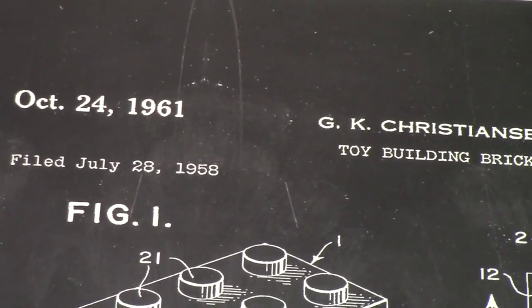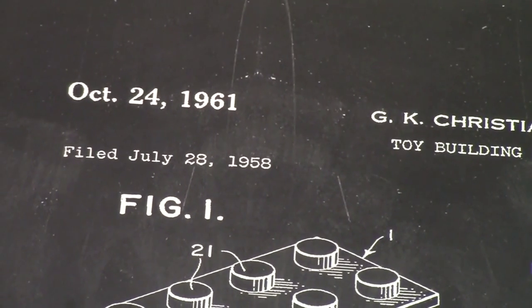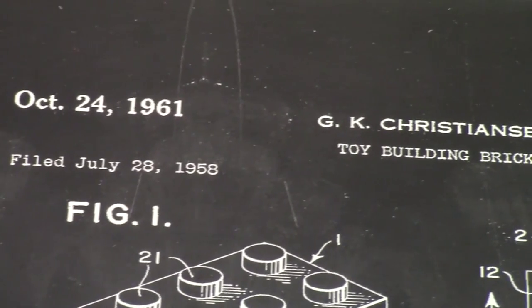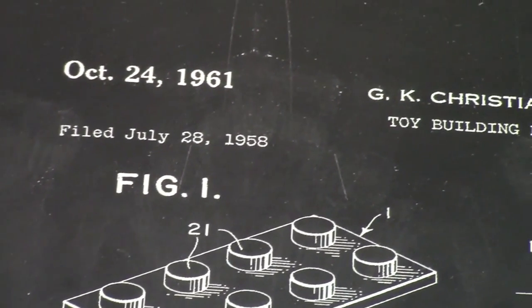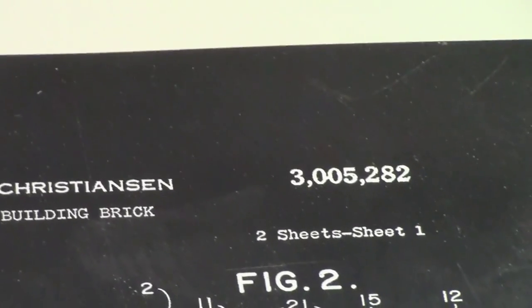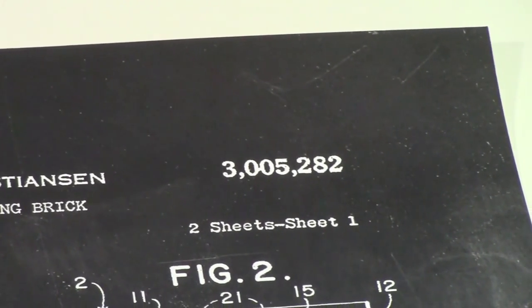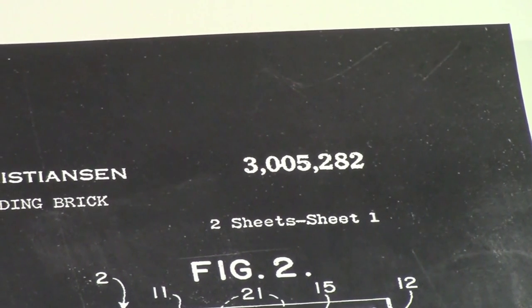This patent also has the date on it. This date is a little different though. This one says October 24th, 1961. It has Ole Kirk's name on it as well as filed July 28th, 1958. And on this side it's got another number. It says 3005282.